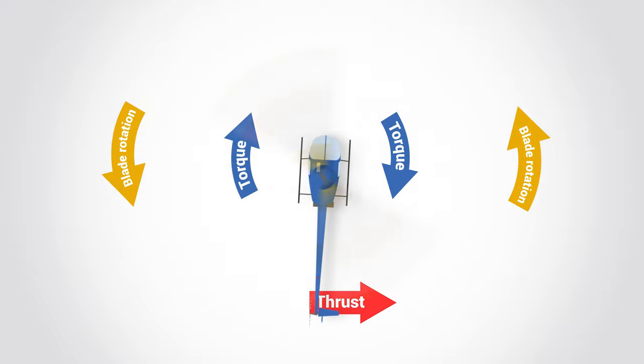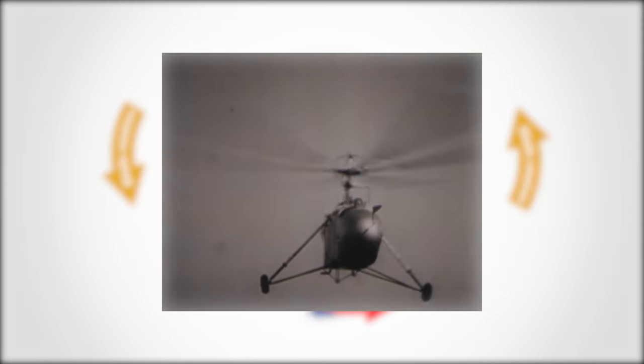The very first helicopter designs didn't have a tail rotor. It wasn't until the fuselage of one of his early prototypes started spinning endlessly around itself that Igor Sikorsky put a small secondary rotor on his design to counteract the torque effect.